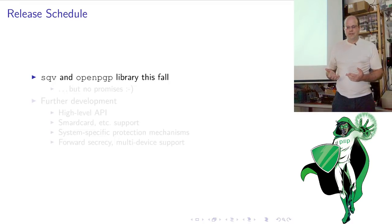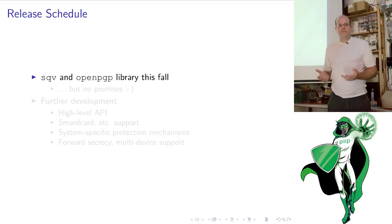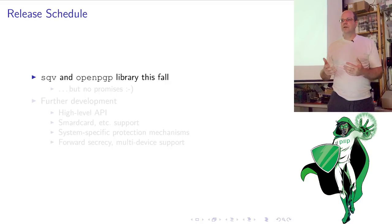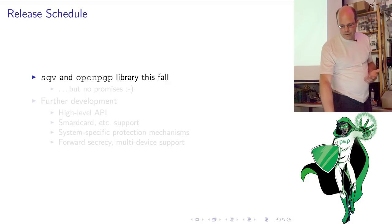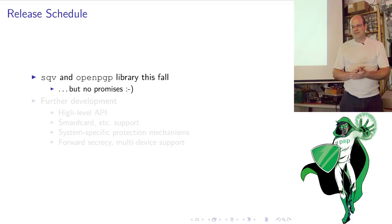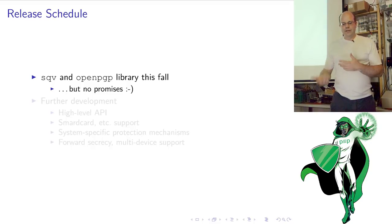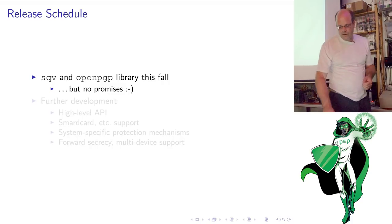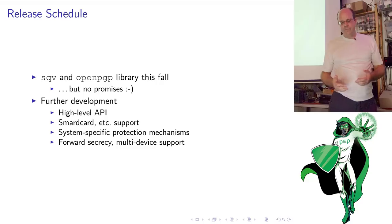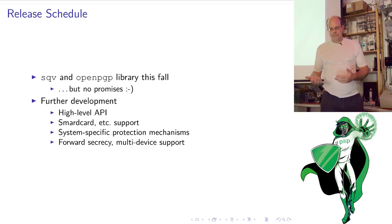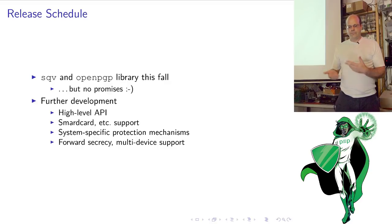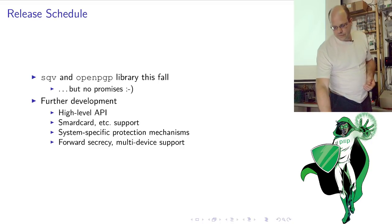What's the release schedule? Hopefully this fall we're going to have a more or less stable version of SQV and the OpenPGP crate — something people can actually use, but no promises. In terms of features we're almost complete but we want to get more experience by porting at least five or six applications. In terms of further development there's the high-level API, smart card and TPM support, system-specific protection mechanisms like process separation, forward secrecy, and multi-device support.